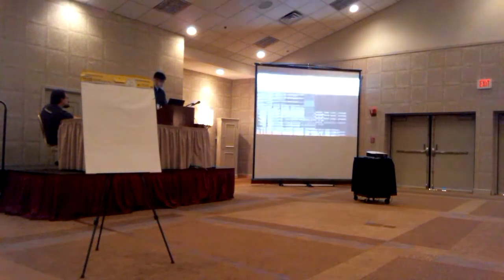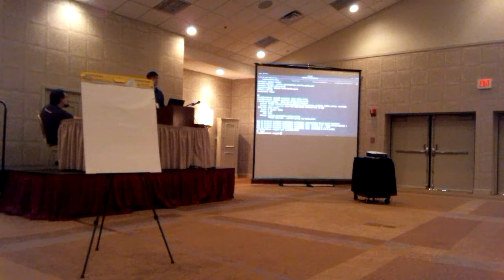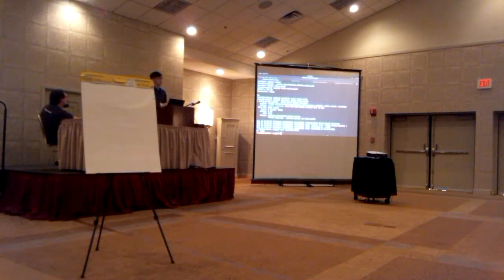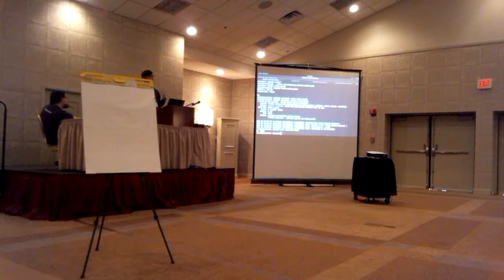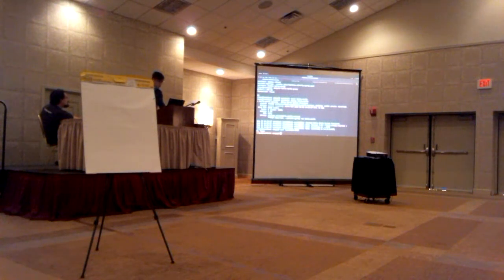A system container image is very straightforward. The existing system containers live upstream in the GitHub project atomic repo under atomic-system-containers. Check out the existing images there — they're a good start for building your own. Please do create ones you feel will be useful and put them up for review on the registry.